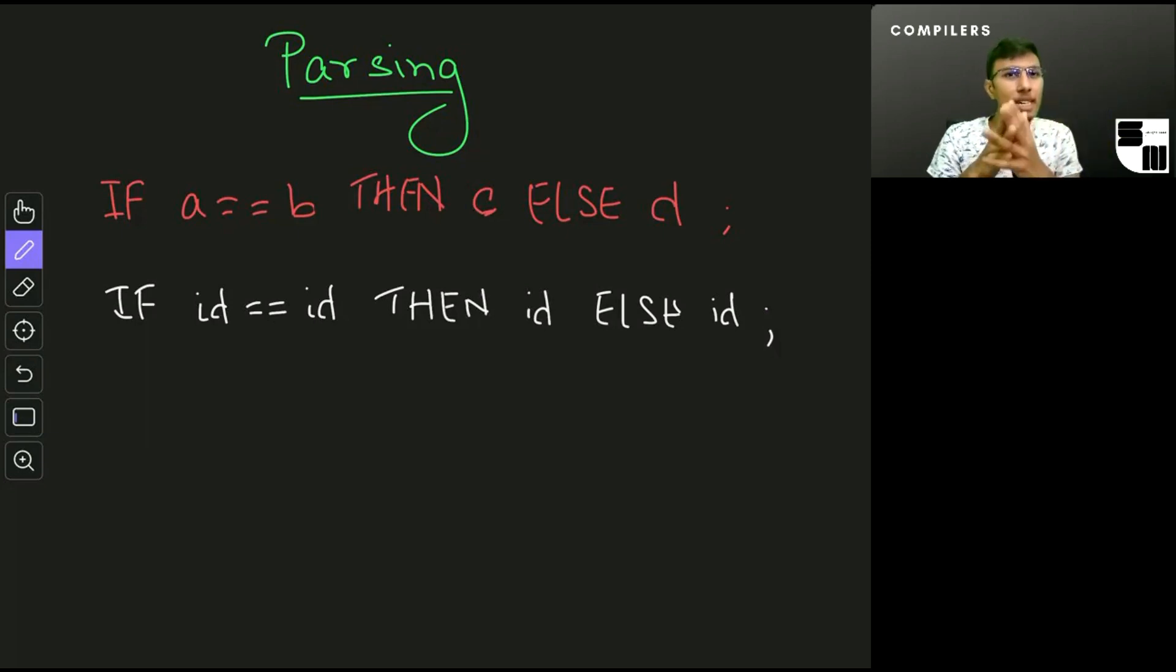So we would still need IF, THEN, and ELSE as it is here, because if we just say something like keyword identifier equal equals identifier keyword identifier keyword identifier, we couldn't say whether that line of code is valid or not because we don't know what keyword it was that was used there.